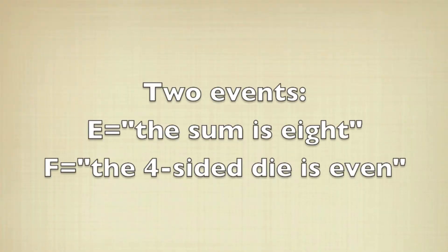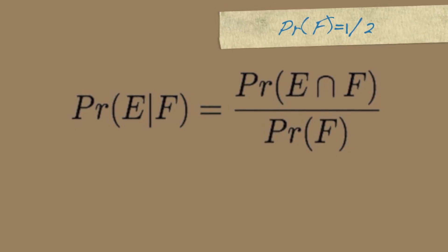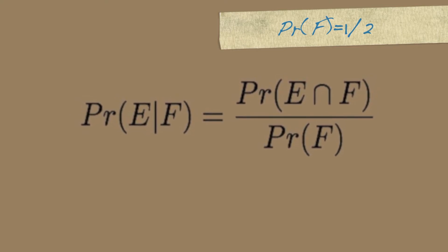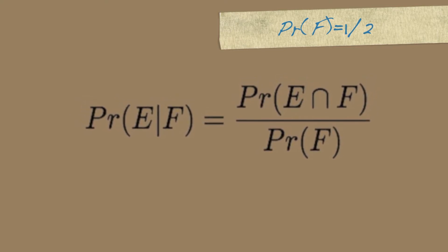Our two events in this case are the one we're looking for, which is the sum is eight, and the one that we're assuming, which is the four-sided die is even. We need the probability of F for the denominator, and that's just going to be one-half, because half of the sides of the four-sided die are even.